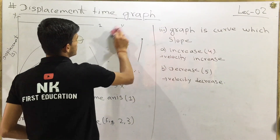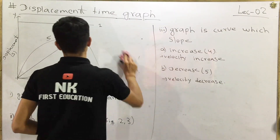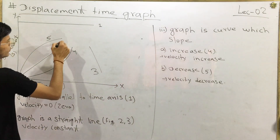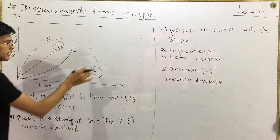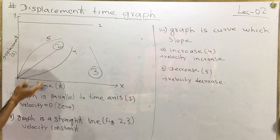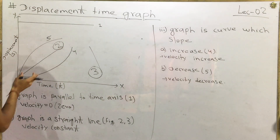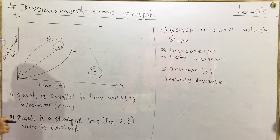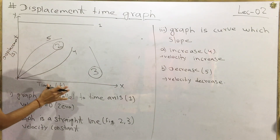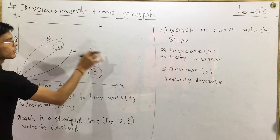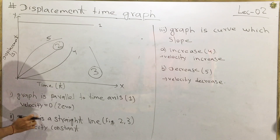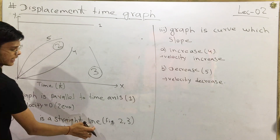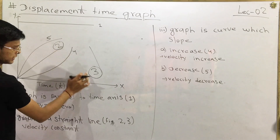Now, in second, the displacement time graph is a straight line — figures 2 and 3. If the graph is a straight line, it means the velocity is constant.